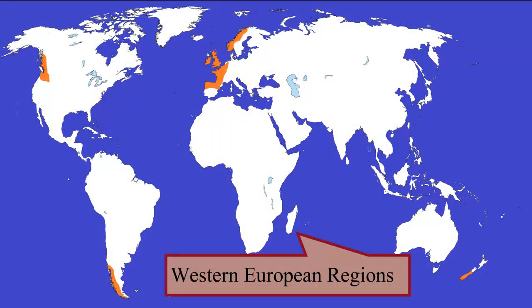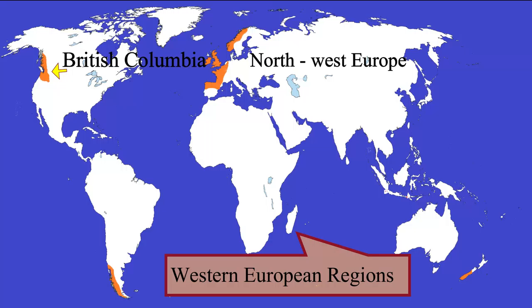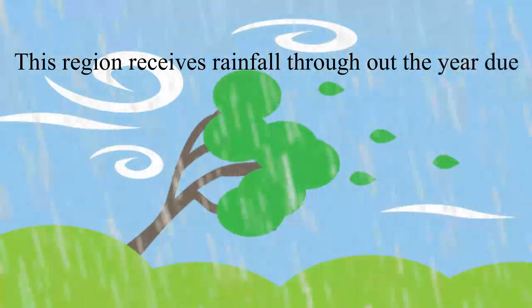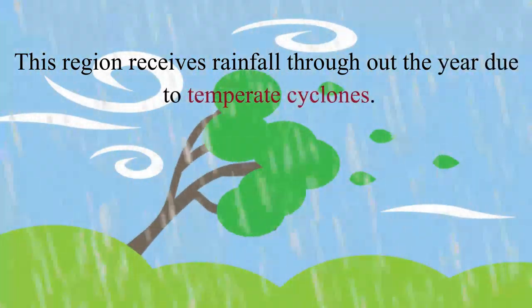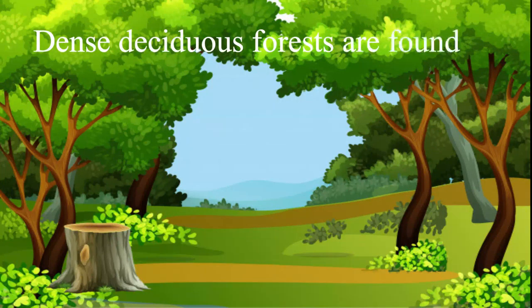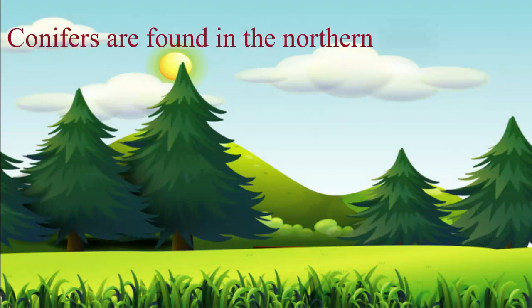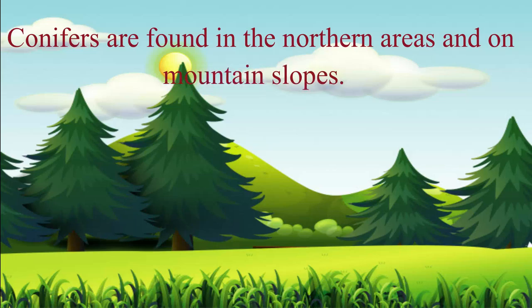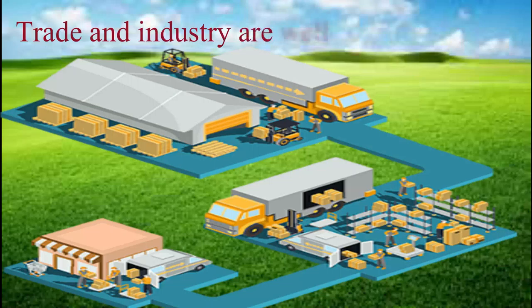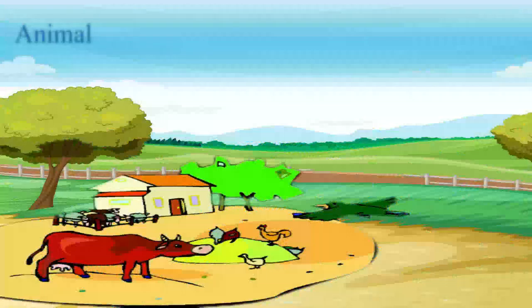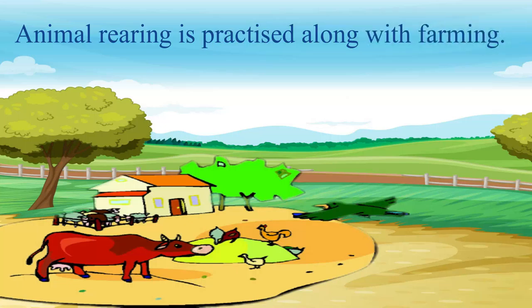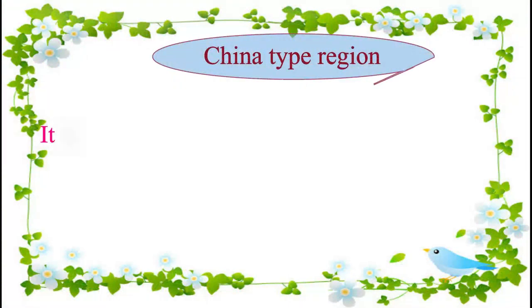Along with North West Europe, the Western European region includes the British Columbia region, the southern part of Chile, and the southern part of New Zealand. This region receives rainfall throughout the year due to temperate cyclones. Dense deciduous forests are found in the Western European-type region, and conifers are found in the northern areas and on mountain slopes. Trade and industry are well-developed here, and animal rearing is practiced along with farming.